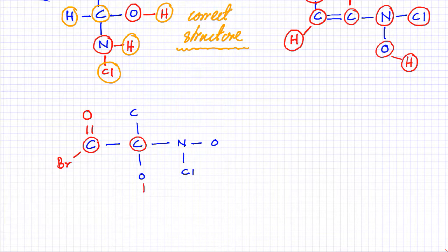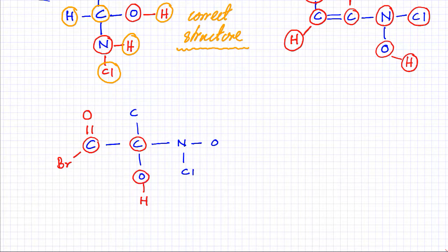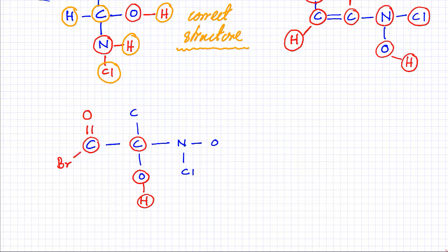Now this oxygen atom is making two bonds and the hydrogen atom was supposed to make one bond — it's doing that. So this is also correct. I'll circle the atoms that have been drawn correctly. Coming to the third carbon atom: it's right now making just one bond, but it's supposed to make four bonds.